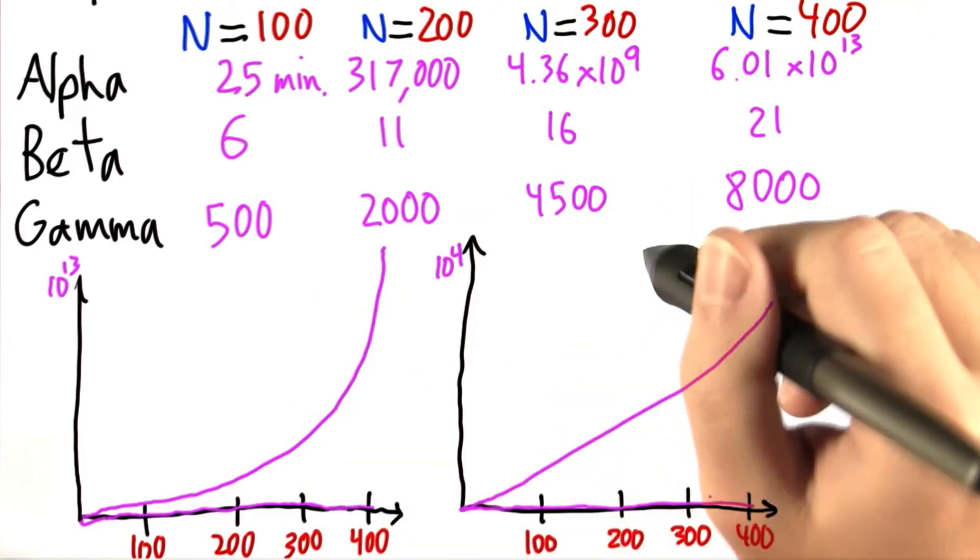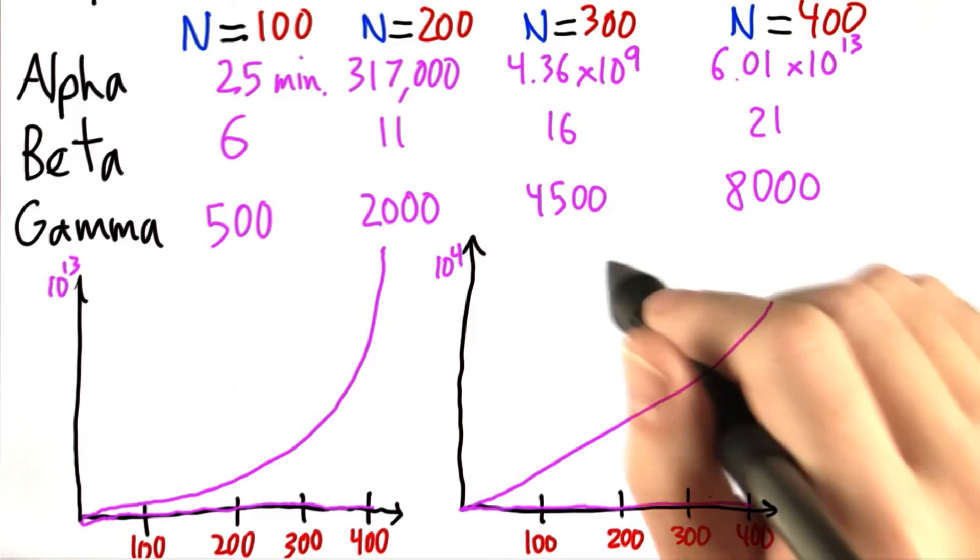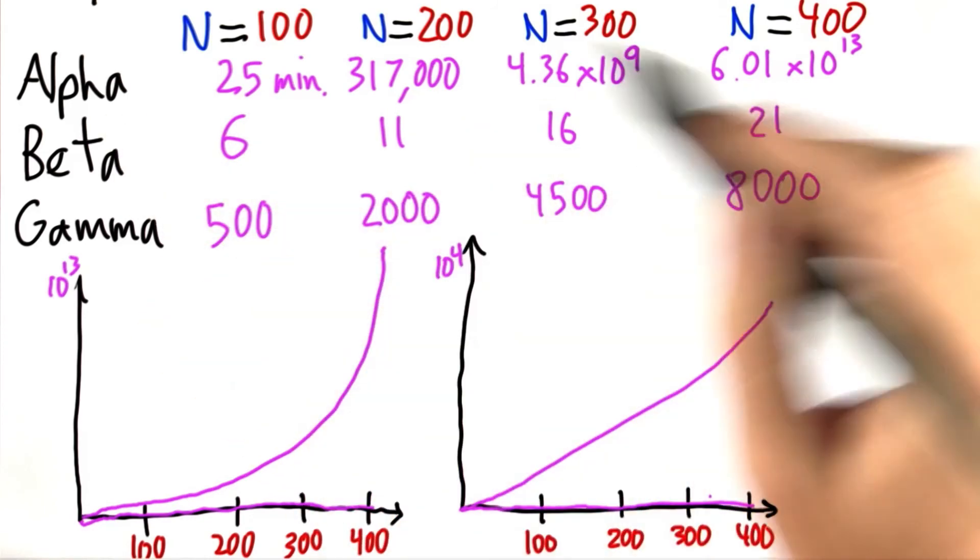And this is kind of a visual, intuitive representation of why alpha is exponential, gamma is polynomial, and beta is linear.